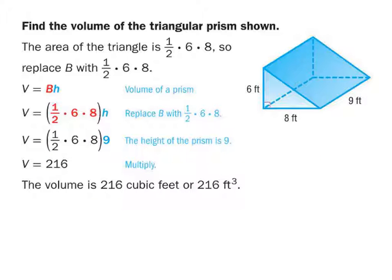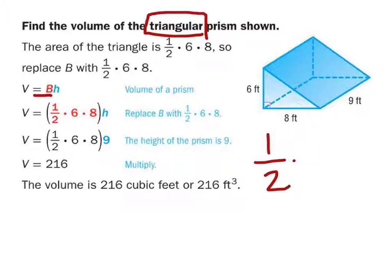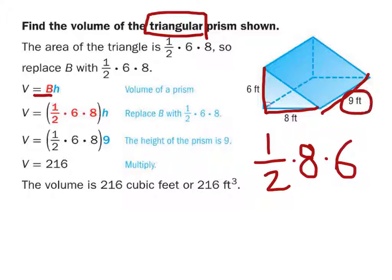If you're confused, here's what the book shows: take B, the area of the base. The base is always in the shape of the type of prism — since this is triangular, it's one-half times the base of the triangle, which is 8, multiplied by the height of the triangle, which is 6. That gives you the area of the base, and then you multiply by the height, which is 9.